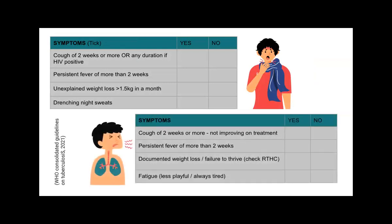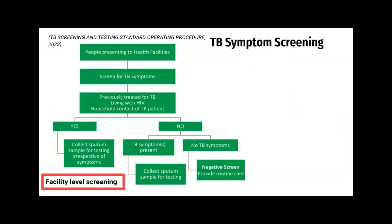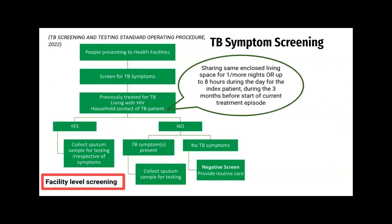For children we look at cough, persistent fever, documented weight loss or failure to thrive — we can check the road to health card to see how they're plotting anthropometrically — and fatigue, being less playful, or tired. At a facility level, patients are screened using the form, the TB check platform, or by a healthcare practitioner. If they have risk factors such as previously treated for TB, living with HIV, or a household contact of a TB patient (defined as sharing the same enclosed living space for one or more nights, or up to eight hours during the day in the three months before the current treatment episode), we would immediately collect a sputum sample for testing irrespective of symptoms. If there are no risk factors and no TB symptoms, this is a negative screen and we provide routine care. If TB symptoms are present, we collect a sputum sample for testing.